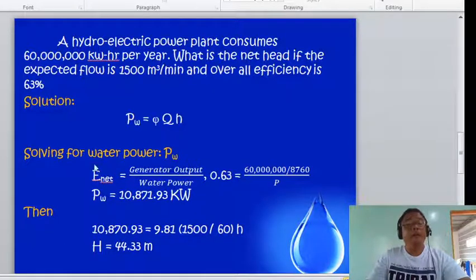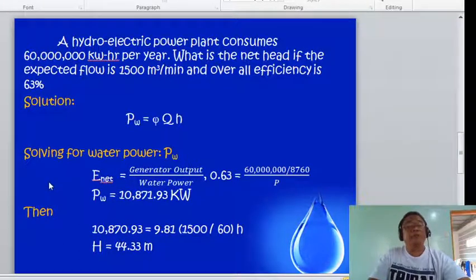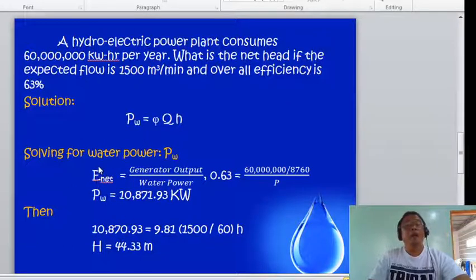Substituting from the formula: 10,870.93 equals 9.81 multiplied by 1500 divided by 60, multiplied by the head. The net head is 44.33 meters.